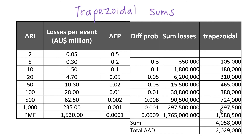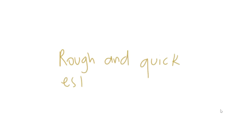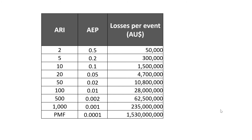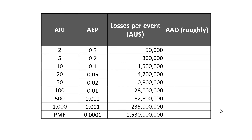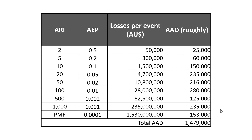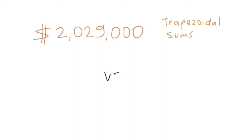So the average annual damage of all the floods in our table is a bit more than $2,000,000. That was the first method, called trapezoidal sums. If you want a rough and quick estimate of average annual damage, there is another method we can use which is much quicker but also less accurate. We simply multiply the losses of each flood by its annual exceedance probability and sum the results. For example: $50,000 times 0.5 is $25,000; $300,000 times 0.2 is $60,000; $1.5 million times 0.1 is $150,000, and so on. The sum of all this is equal to $1,479,000. Note the difference between the two results — depending on what you need this information for, you may want to use the slower but more accurate method or the quicker but less accurate method.